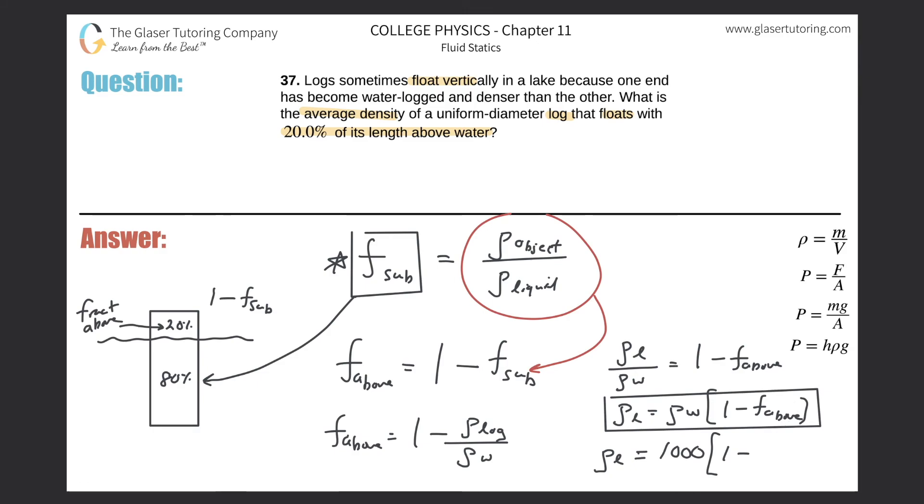So fraction above is 20%, so here we have 0.2. Just do the multiplication. This is just 0.8, right? 0.8 times 1000 is 800. So the density of the log is about 800 kilograms per cubic meter. Those are the standard units.